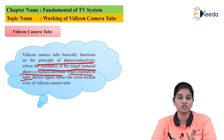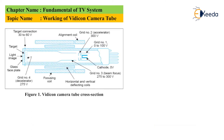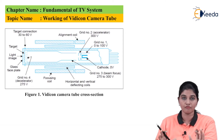Now let's look at the construction or cross section of the Vidicon camera tube. The figure shows the cross section, which consists of grids, a focusing coil, an alignment coil along with horizontal and vertical deflection plates. It has a target connection with a voltage of 30 to 60V. Grid number 4 has a voltage of 275V, while grid number 2 acts as an accelerator with a voltage of 300V. Grid number 1 operates in the voltage range from 0 to 100V, and there is a cathode. Grid number 3 is used for beam focusing and has a voltage range of 275V to 300V.